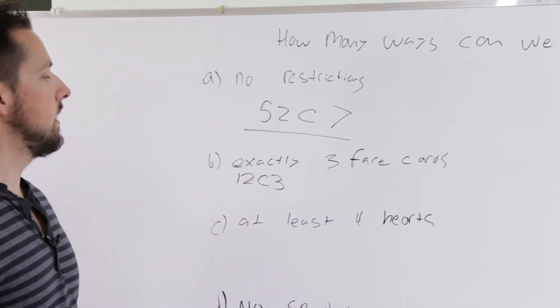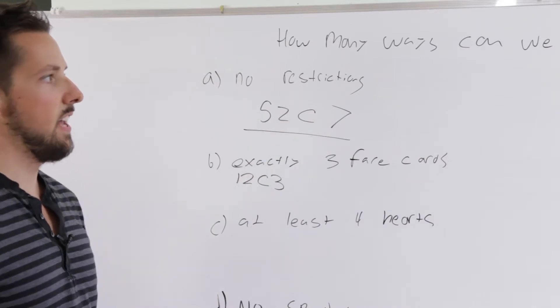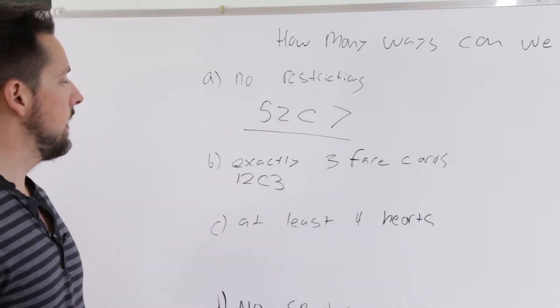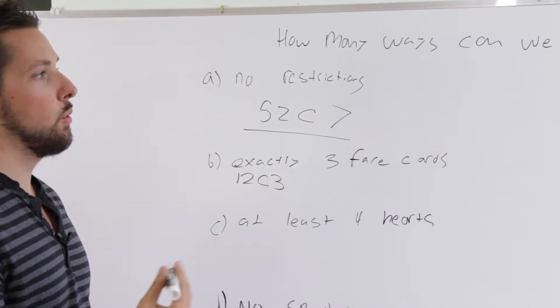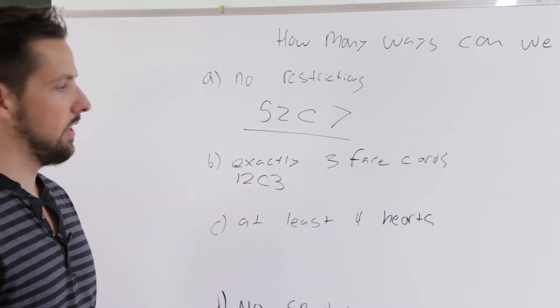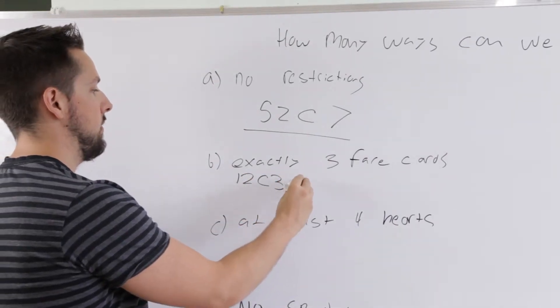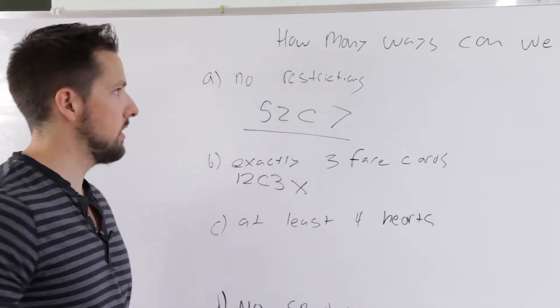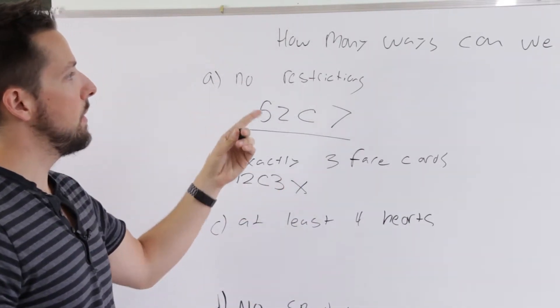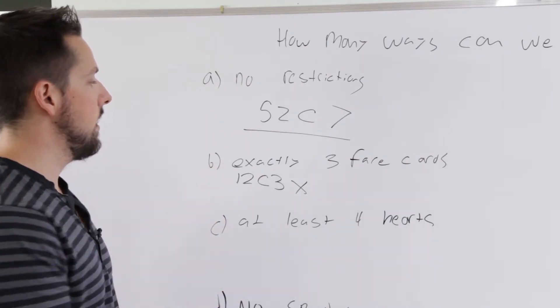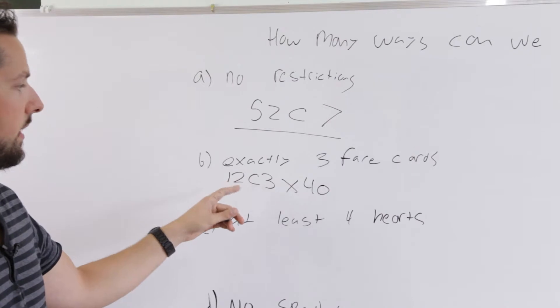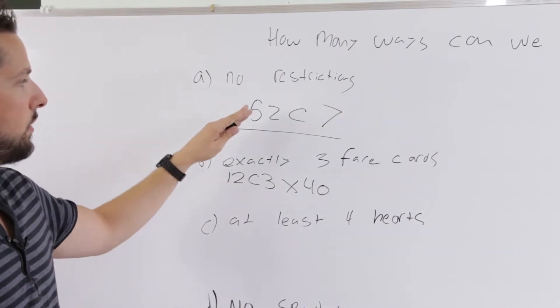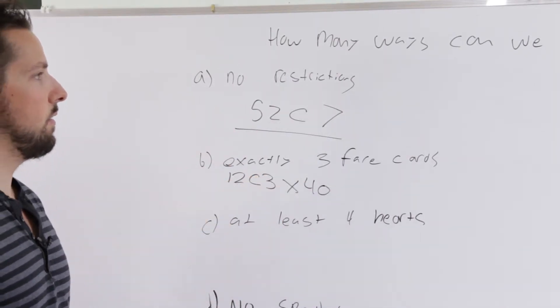But we're not done yet because we only have three cards and we need a seven card hand. So on top of this, we need three face cards and four other cards that aren't face cards. So the and is represented by multiplication sign. And how many cards are in a deck that aren't face cards? There's 40 because we take away the number of face cards from the total. So there's 52 cards, 40 cards that aren't face cards.